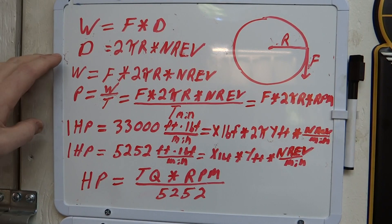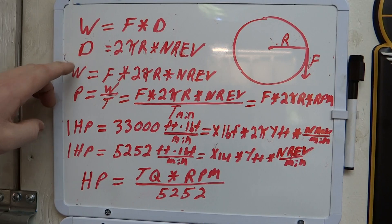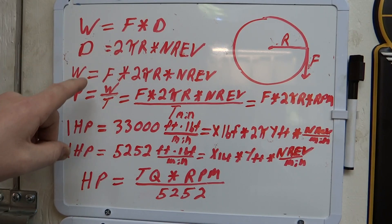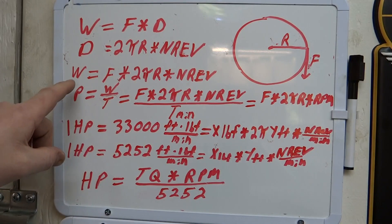So now we're going to define work here in terms of this distance. We're going to change and represent that D with this here in this equation. So work is going to be force times 2πR times the number of revolutions.